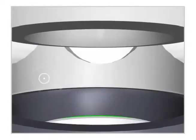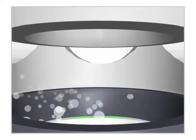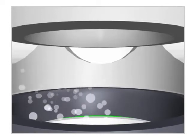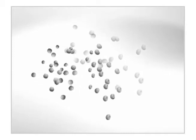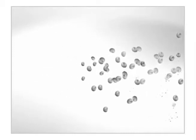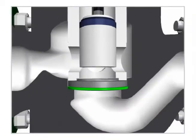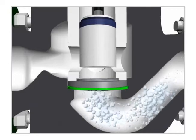Vapor bubbles form in the liquid when the pressure falls to near the level of the liquid's vapor pressure. When the pressure recovers downstream, the vapor bubbles implode and return to liquid form. After the initial bubble formation and collapse, the bubble may reform and collapse a second time.